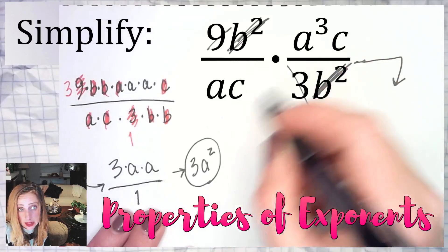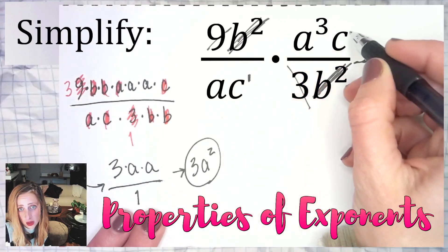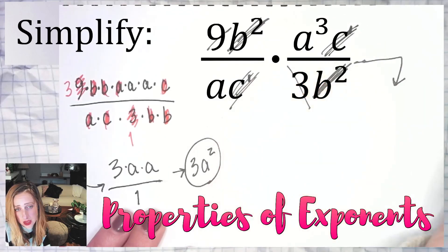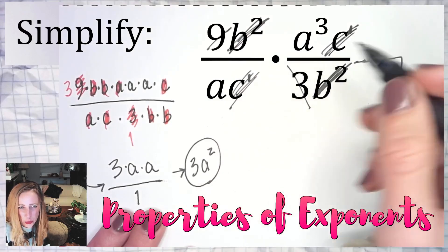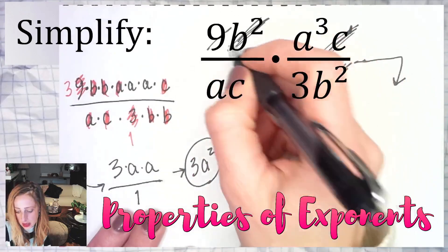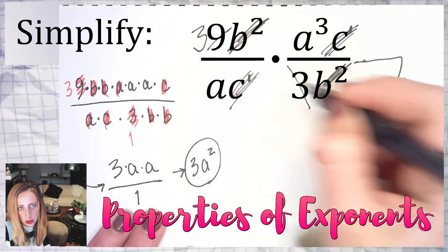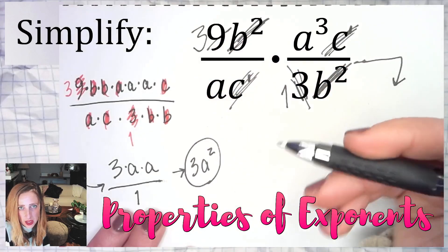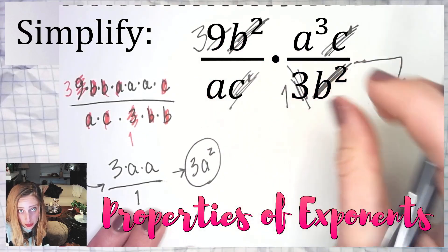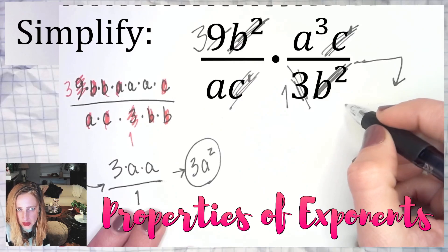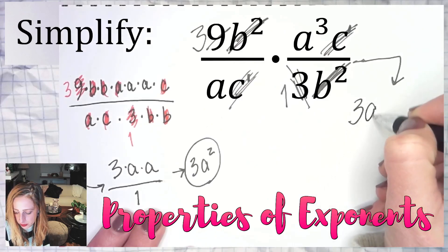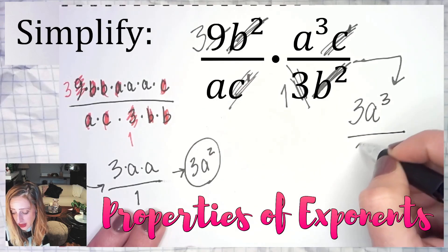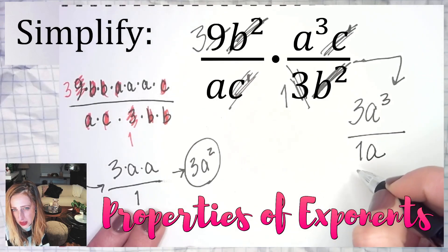All right, the c—both of these c's, some of you may benefit from writing it out as c to the first, but in either case c over c is one. Now, oh and I reduced the nine and the three and that should have become, like we said earlier, a three and a one, but a one on bottom isn't really necessary to write as much as a one on top would definitely be necessary. But let's look at what we got so far. We have three a to the third over one a. Again that one's not necessary.